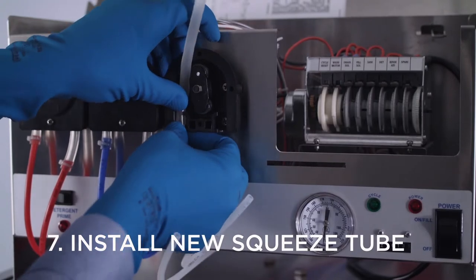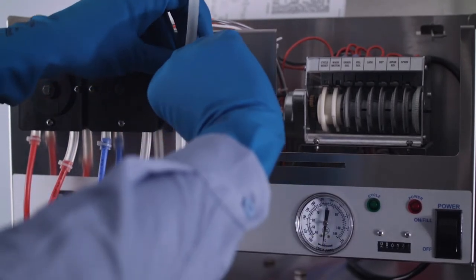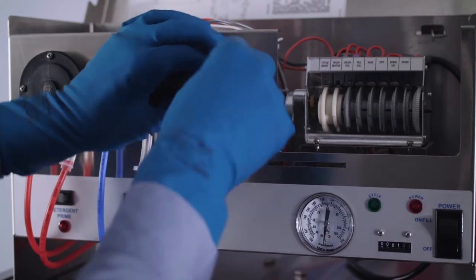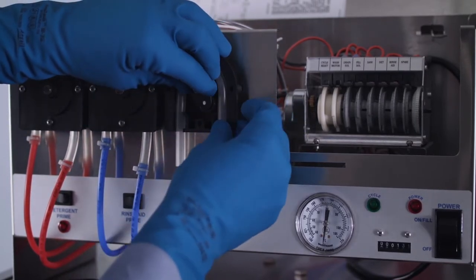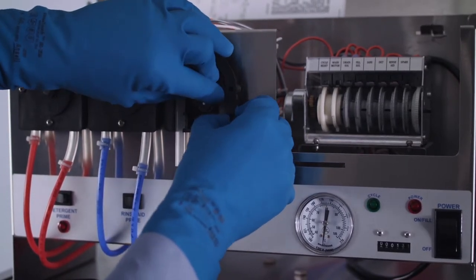To install the new squeeze tube, use your fingers to press it into the groove in the rear housing. The pump gear rollers can be rotated as needed to help position the squeeze tube correctly.